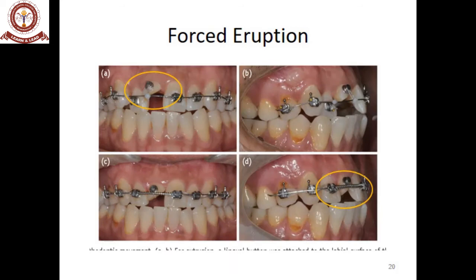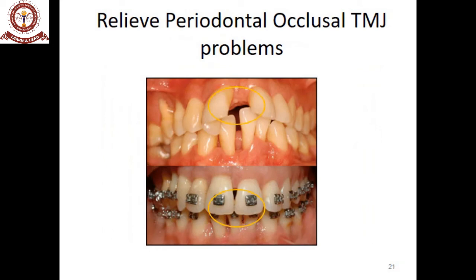In the next case, a fractured tooth requires sufficient crown exposure so that the replacement crown has adequate retention. Braces and a button on the buccal aspect were placed and the tooth was extruded. Comparing pictures A to D, the amount of extrusion achieved provides sufficient tooth structure above the gingival margin, making it easy to prepare a crown with better retention using this forced eruption method.